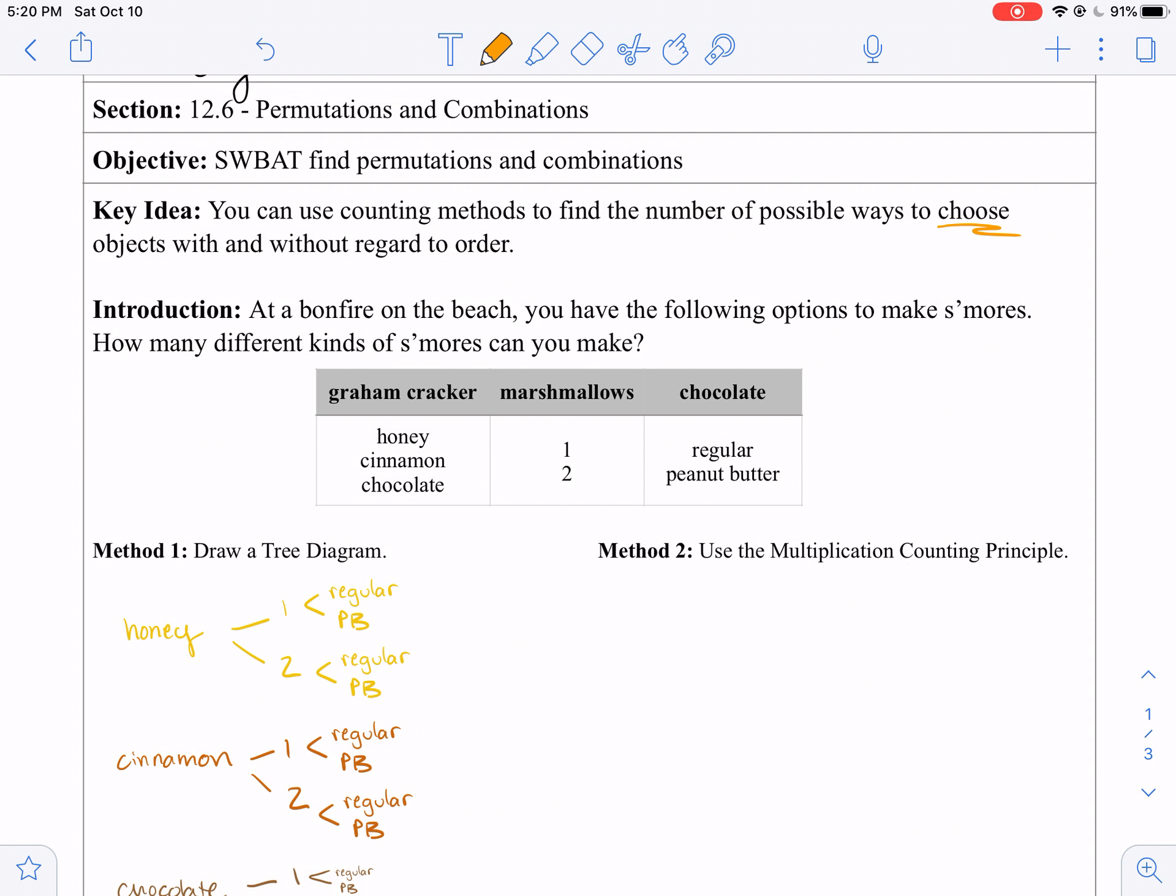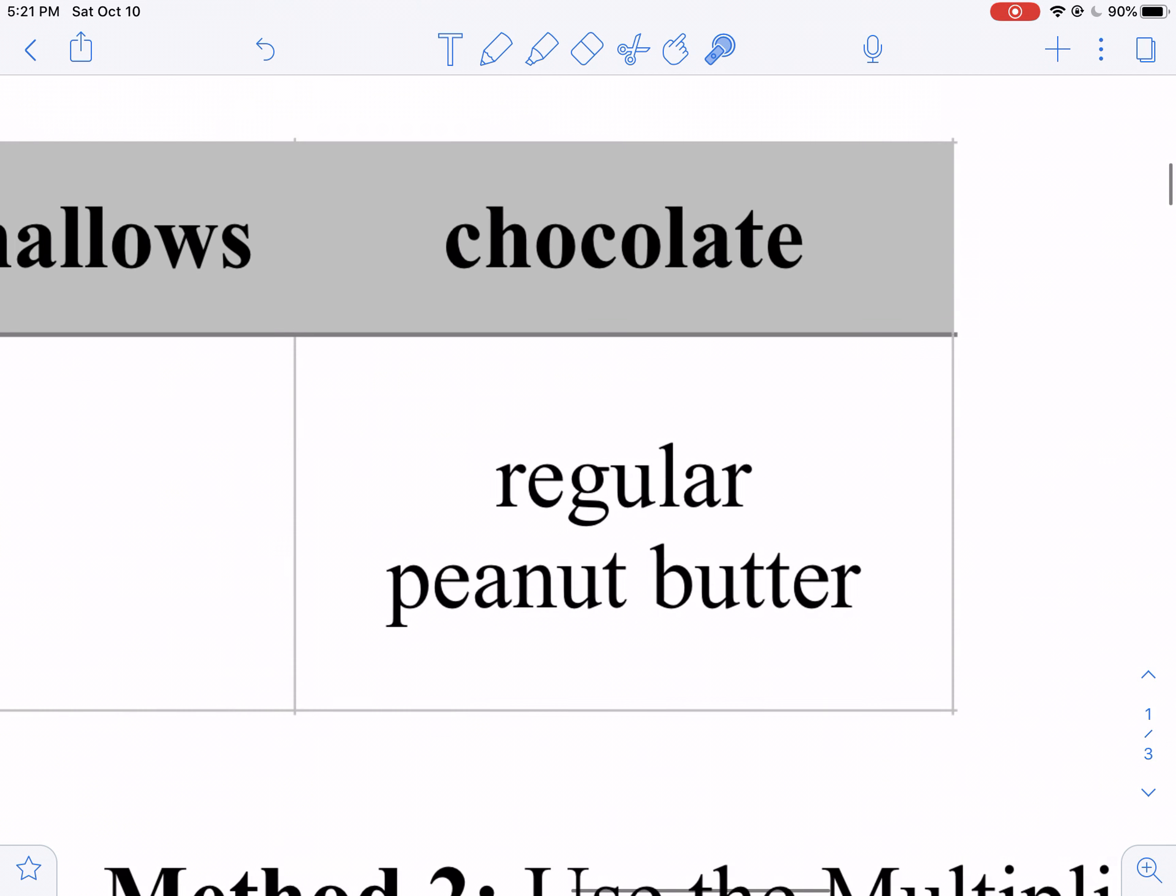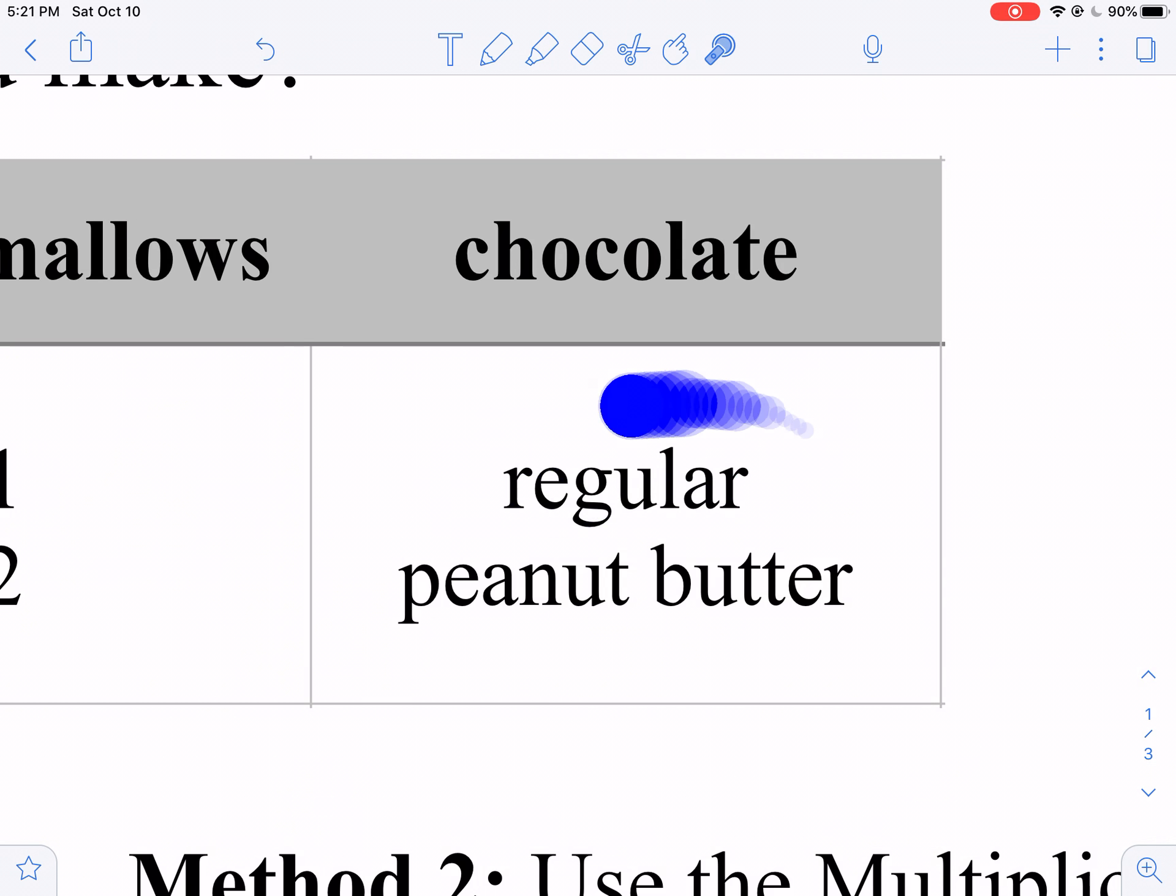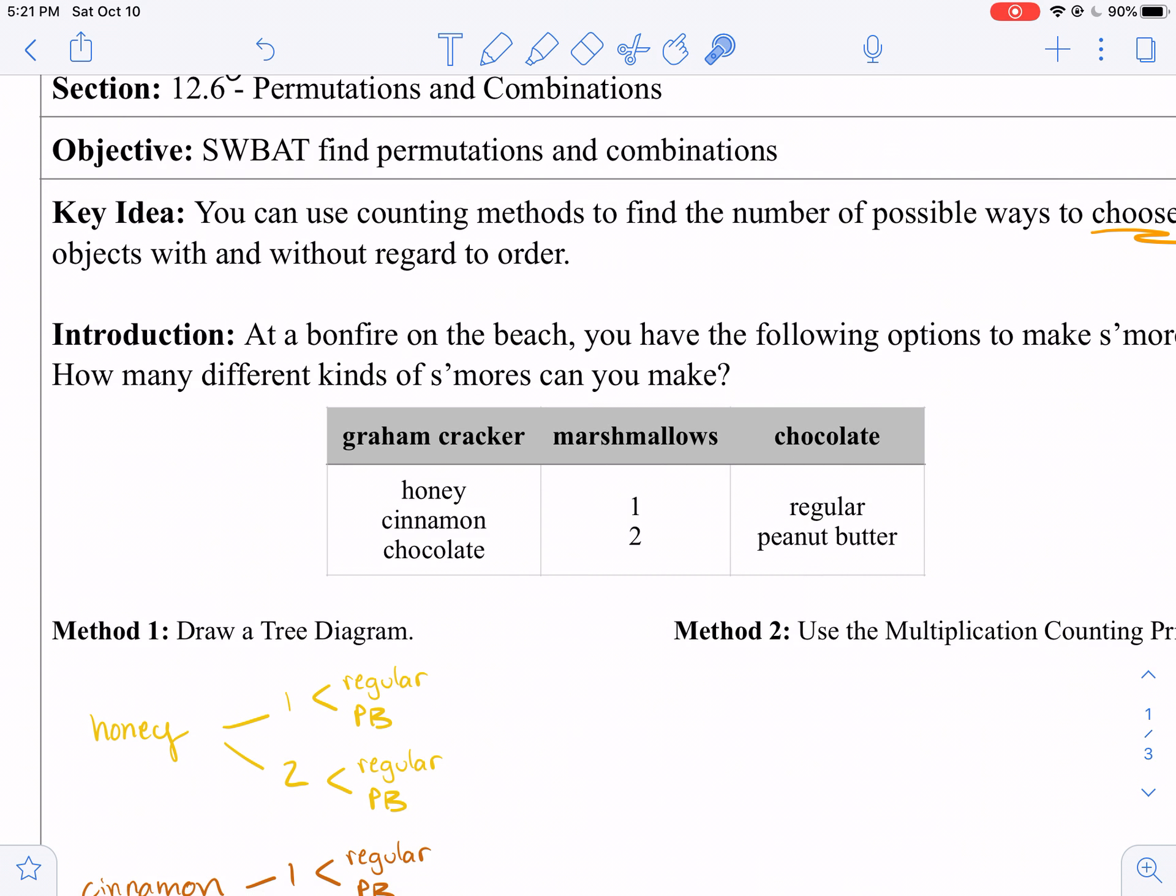The key idea of the day is that you can use counting methods to find the number of possible ways to choose objects with and without regard to order. So here's the deal, you decide to have a bonfire at the beach with your family and you can make some s'mores, which is like one of my personal favorite snacks. You bring three options of graham crackers: honey graham crackers, cinnamon graham crackers, which are the best kind, and then also chocolate.